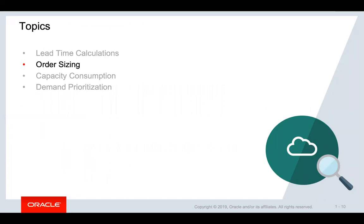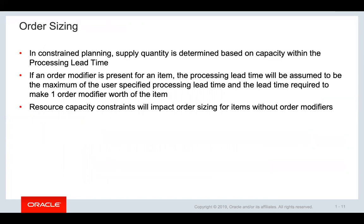Now we'll discuss how supply quantity is determined in a constraint plan. In constraint planning, supply quantity is determined based on capacity within the processing lead time. If an order modifier is present for an item, the processing lead time will be assumed to be the maximum of the user-specified processing lead time and the lead time required to make one order modifier quantity. Resource capacity constraints will impact order sizing for items without order modifiers.